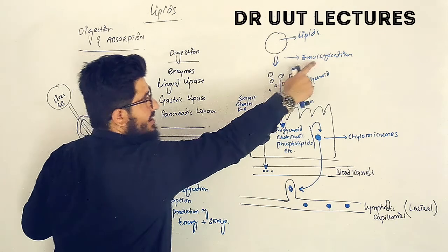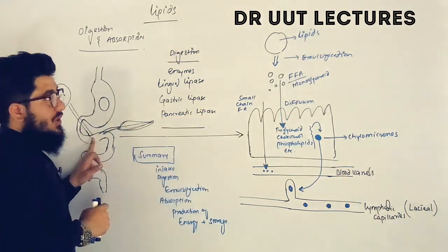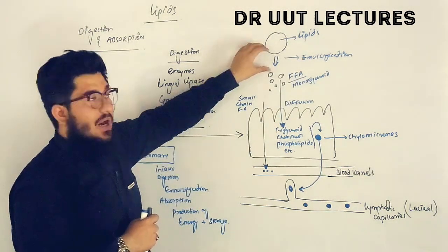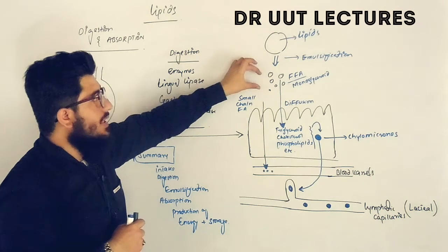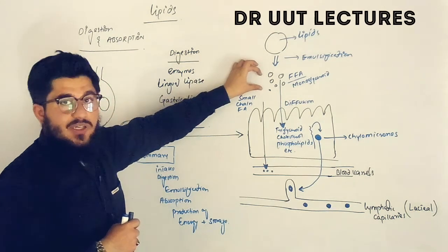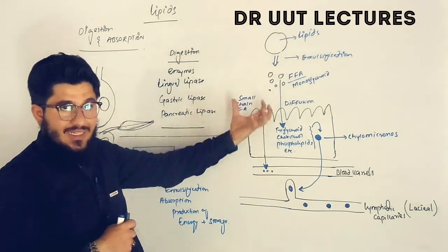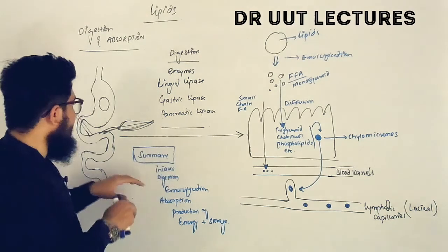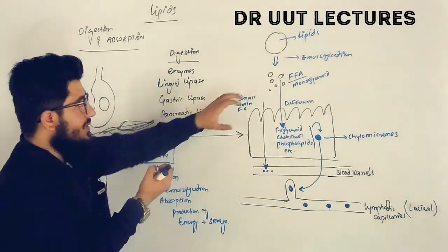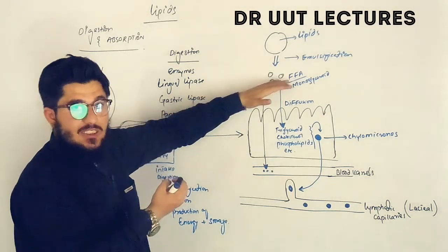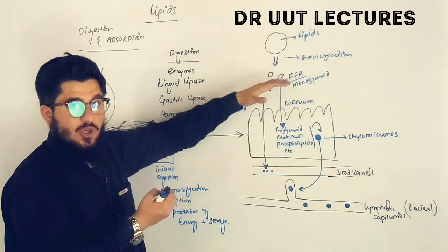This process is known as emulsification. After emulsification, our lipids are converted into small-sized, tiny droplets. It is then very easy for the enterocytes of the intestine to absorb these small, tiny droplets.